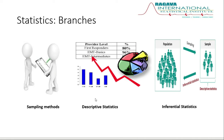After data collection, descriptive statistics covers how to present our data — which table and which graph to use for data visualization. After presenting your data, inferential statistics is used to make predictions and generalize solutions to the population based on sample data.